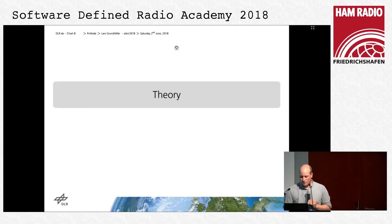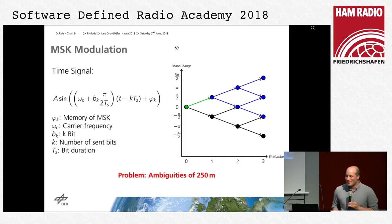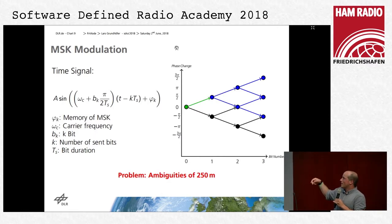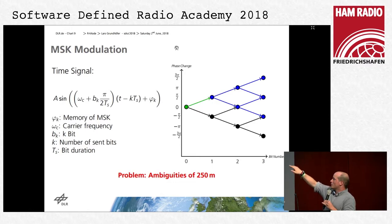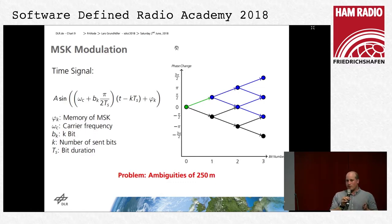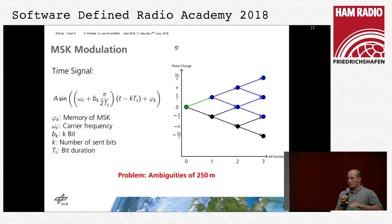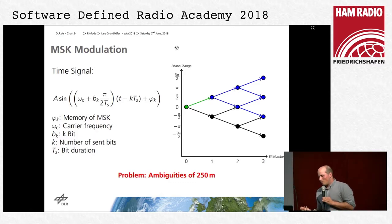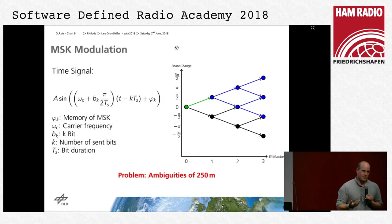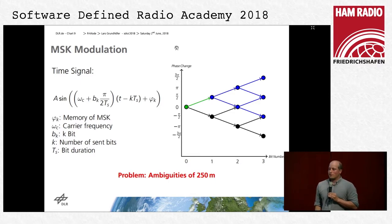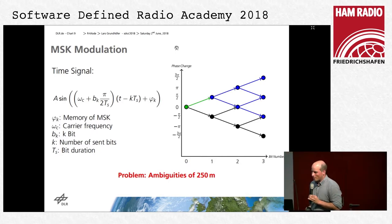The MSK signal is a phase shift keying where information is stored in the phase shifting during one bit time. Depending on the bit sent — a one or minus one — the frequency shifts slightly, and overall this is phase-continuous. We have to introduce this VK, called the memory of the MSK. The problem for positioning is this unknown parameter introduces ambiguities of 250 meters, corresponding to the half phase. This is why they later introduced the continuous wave signal.